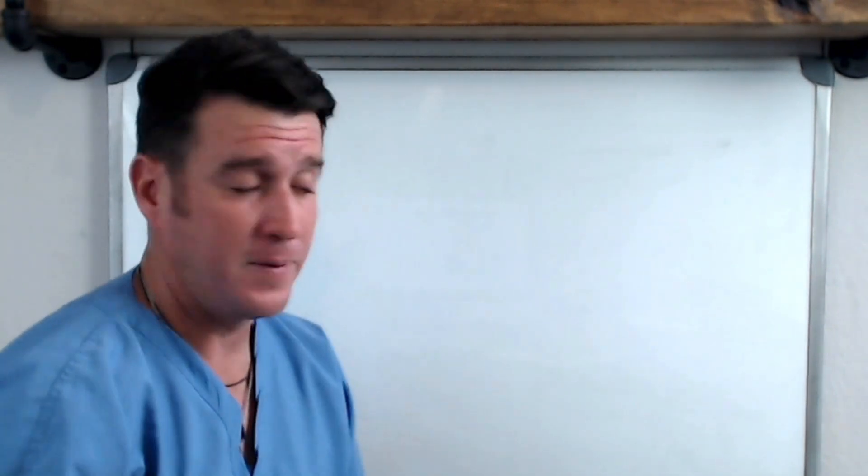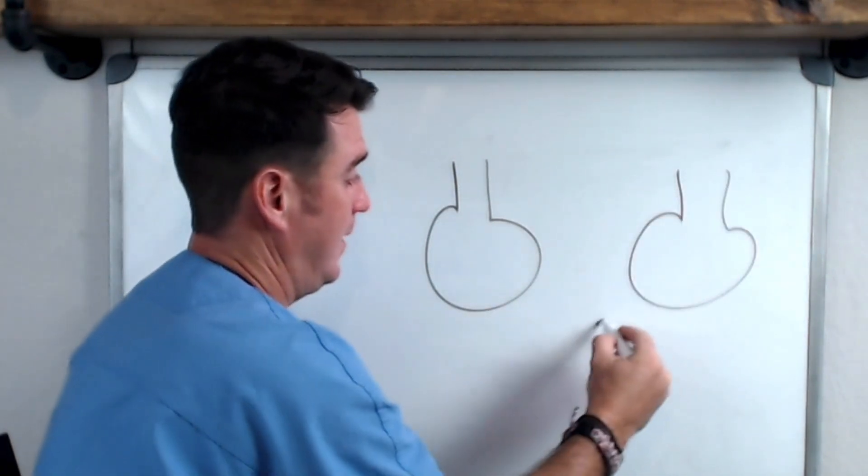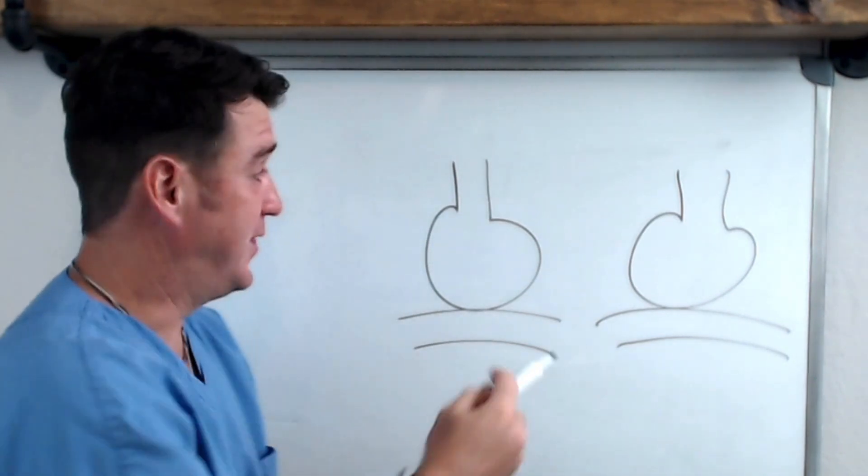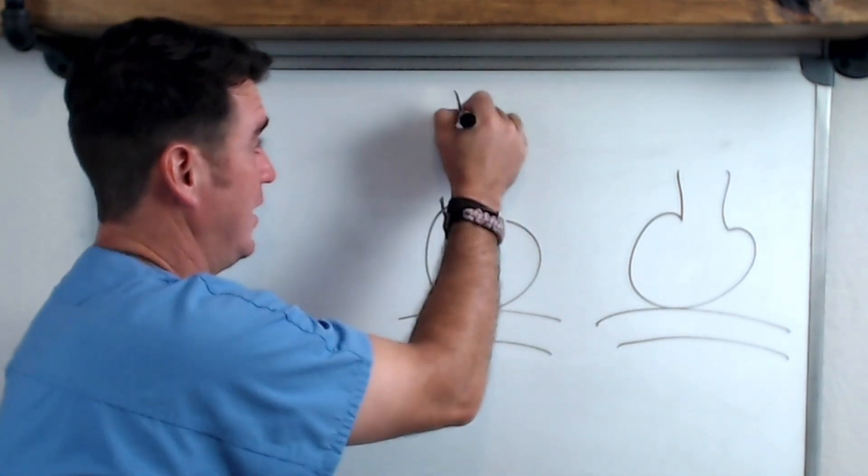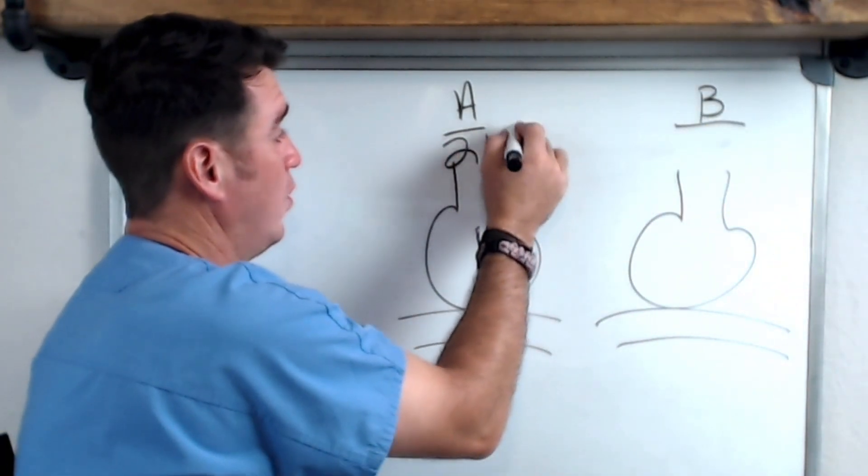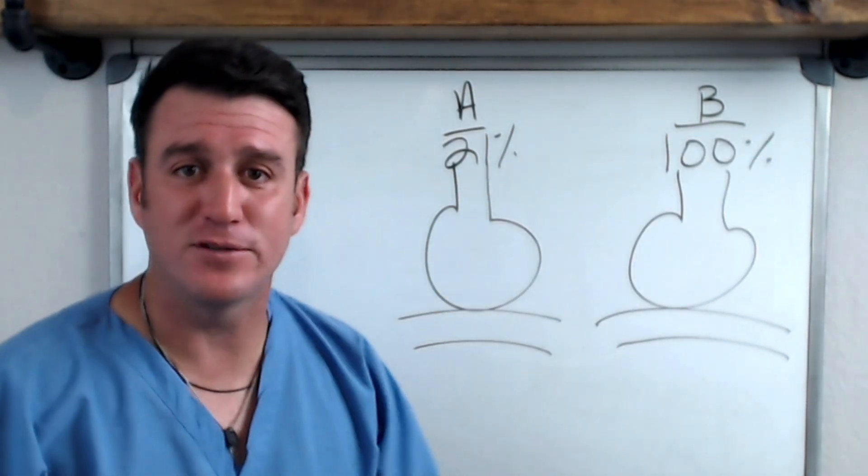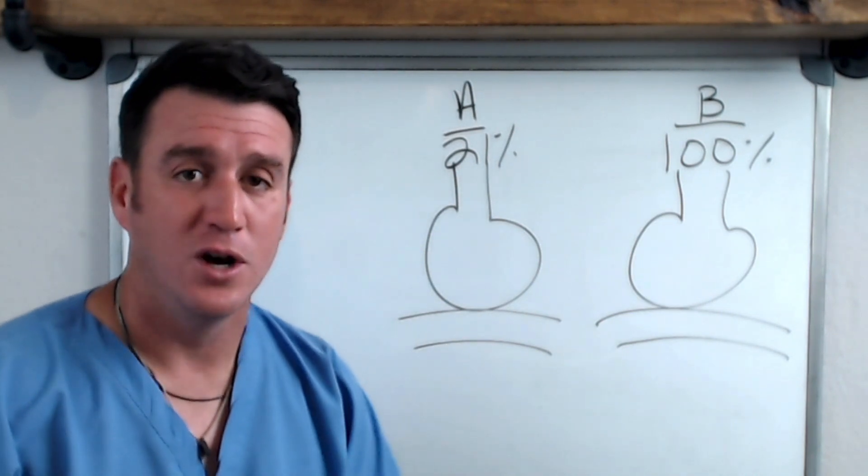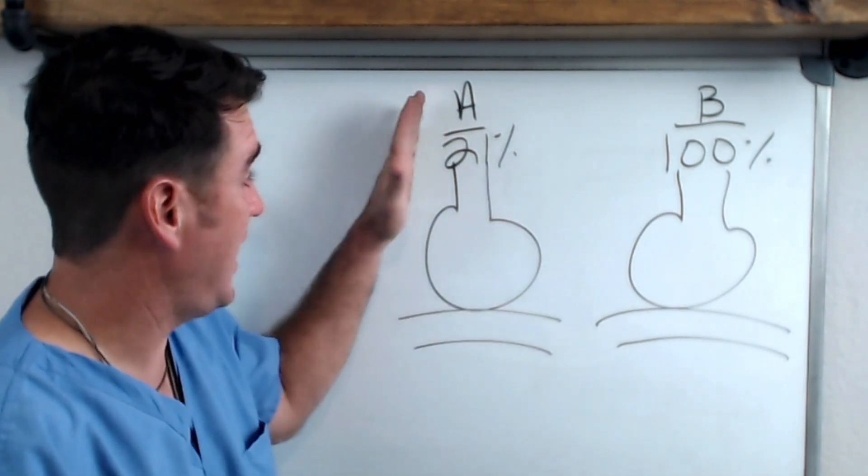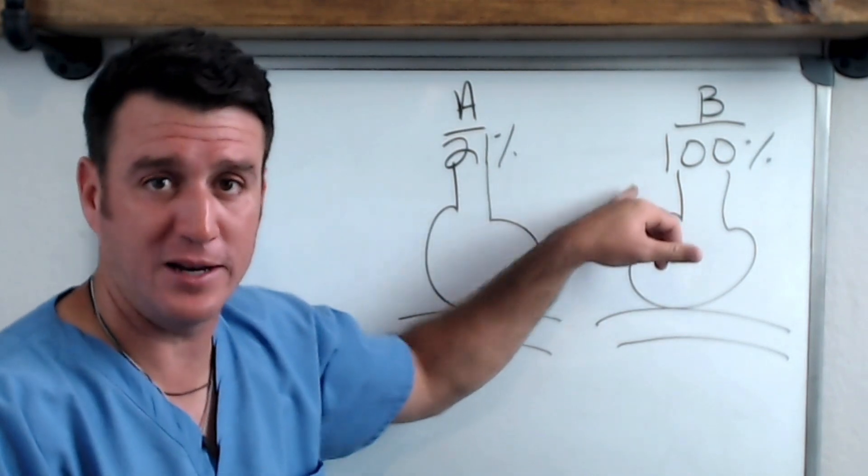To do this I'm going to draw two alveoli up here, and this is the pulmonary blood flow passing by this alveoli. This alveoli here we'll call letter A and we'll call this one B. A is breathing 21%, this one is breathing 100%. Now what we have to do is ask ourselves what is the partial pressure inside of that alveoli for patient A who's breathing 21% and patient B who's breathing 100%?